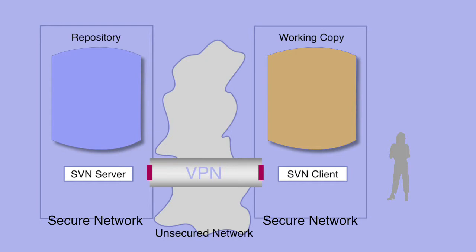The VPN encrypts any information that the client sends to the server, then passes the encrypted data to the server where the VPN decodes it and passes it onto the subversion server. The subversion server sees the data as if it had come from an unencrypted client running on the local network. Similarly, when the server sends reply data to the client, the VPN encrypts it on the server and passes it to the client, which then decodes the encrypted data — the subversion client sees the data as if it were on the local network.